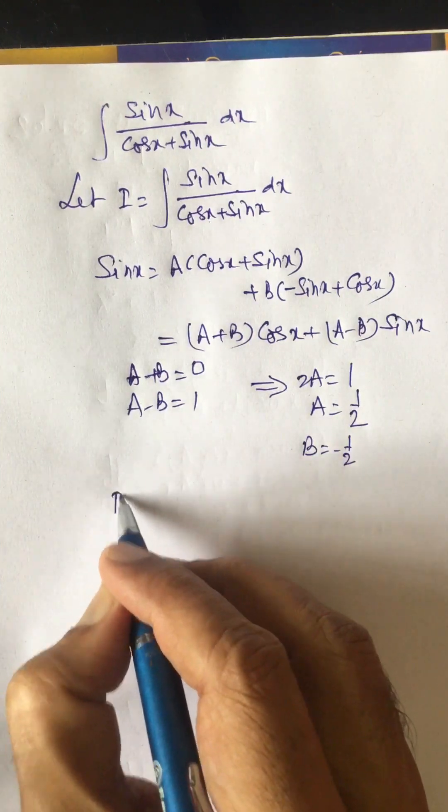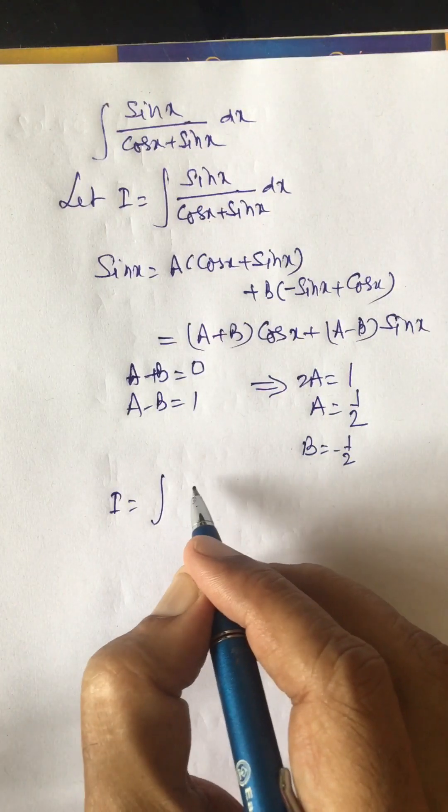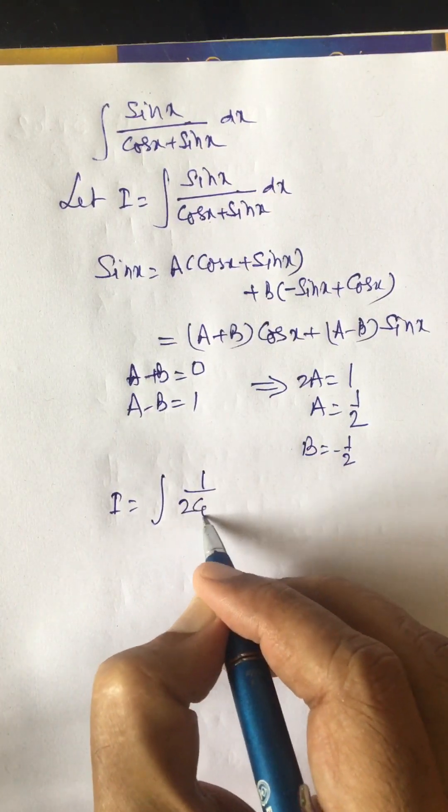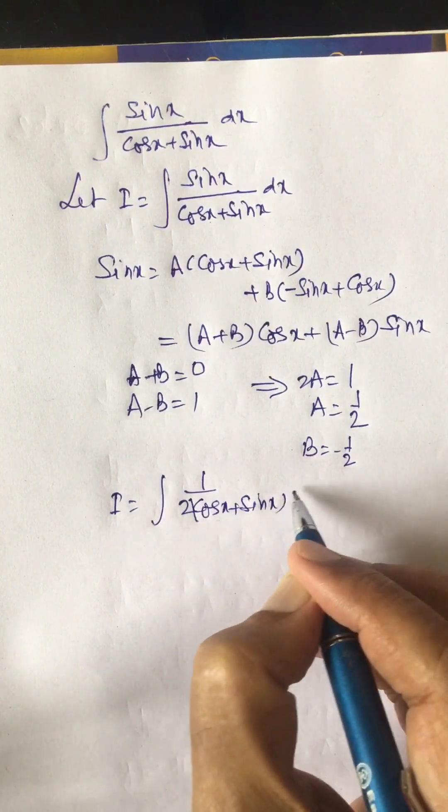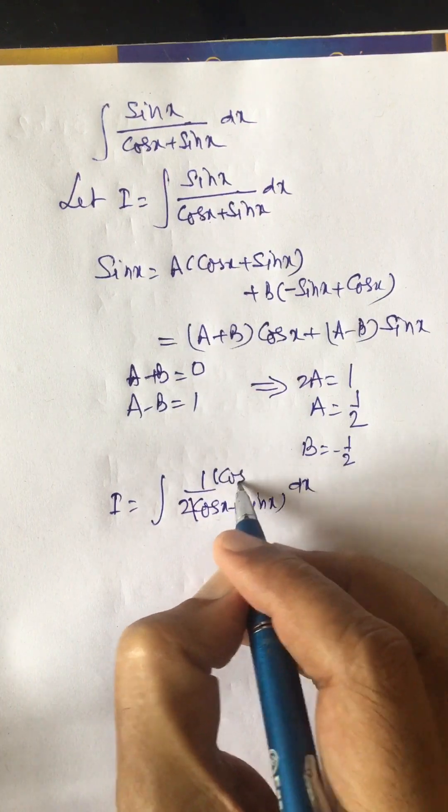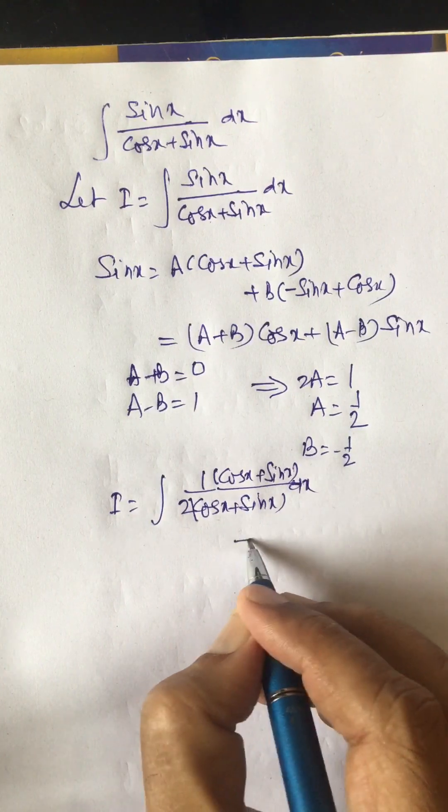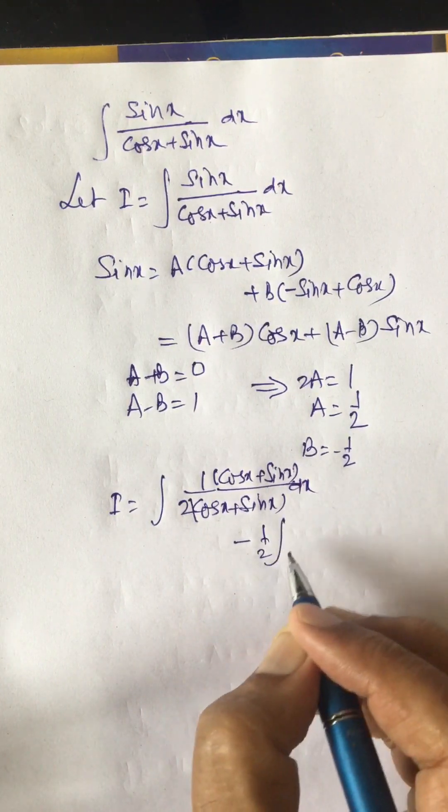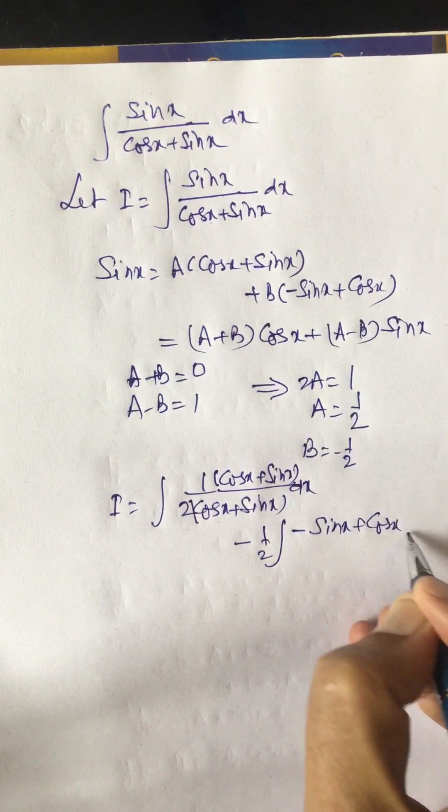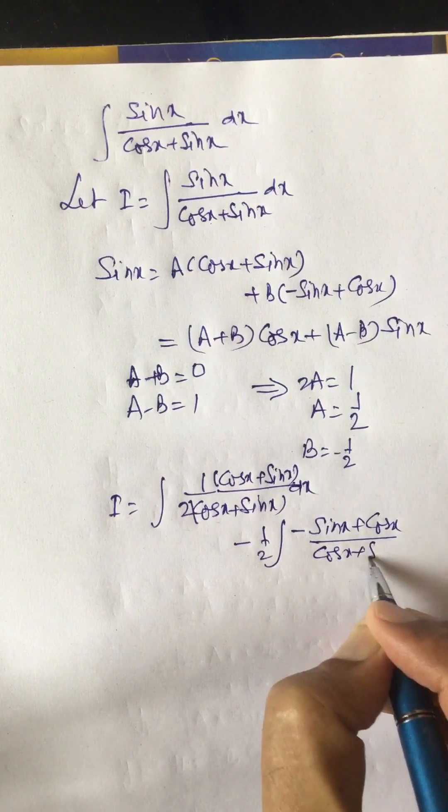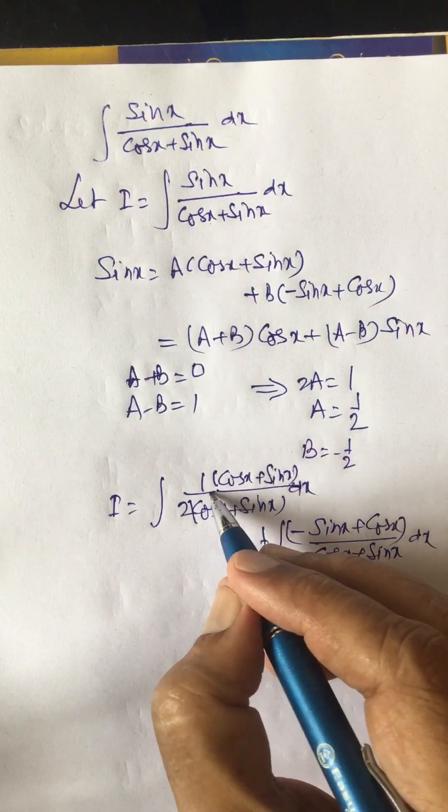We can write this given integral as I equals integral 1 by 2 times cos x plus sin x over cos x plus sin x dx, plus integral minus 1 by 2 times minus sin x plus cos x over cos x plus sin x dx. Here this cancels with this.